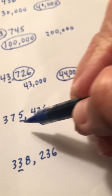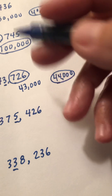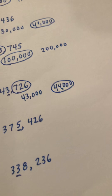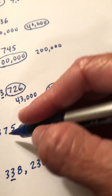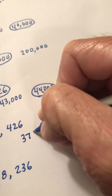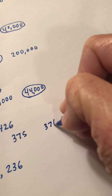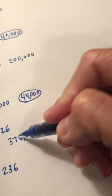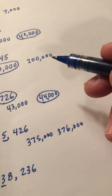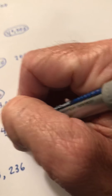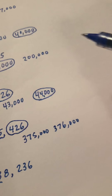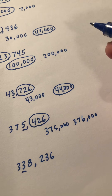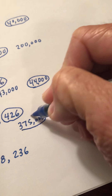Here's an example in the hundred thousands where we're rounding to the nearest thousand. Skip counting by one thousand, this would be between three hundred seventy-five thousand and three hundred seventy-six thousand. My halfway point between those is three hundred seventy-five thousand five hundred. Looking at the rest of this number, four hundred twenty-six is below the five hundred I would need to round up, so this number rounds down to three hundred seventy-five thousand.